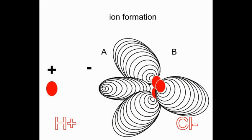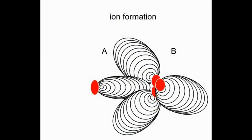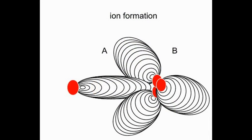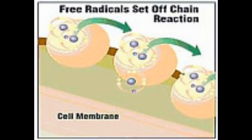Organic acids are molecules with a COOH head. Electrons, freed of their neutralizing protons, start a chain reaction that can easily run out of control.